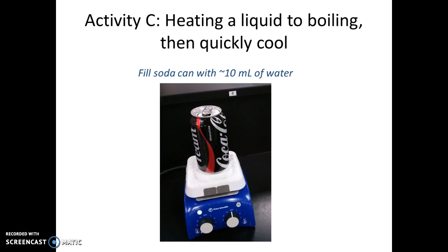For Activity C, you're going to be heating water to boiling and then cooling it quickly. Add about 10 milliliters of water to a clean soda can — empty clean soda cans will be available in the lab. Heat the can using the hot plate found in the cabinet below the sink; set the hot plate at about 6 or 7. You'll know the water is boiling when you see steam rushing out the top. At that point the entire can is filled with water vapor, which is your hot gas sample.